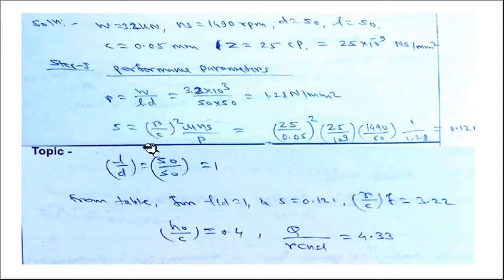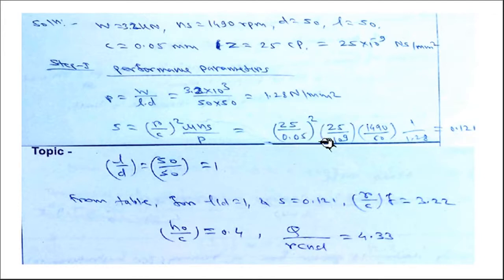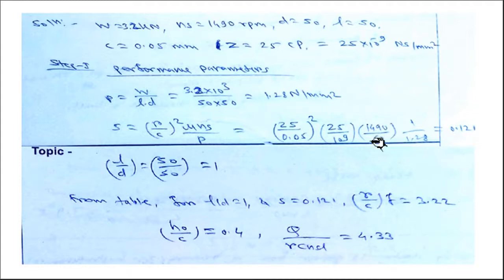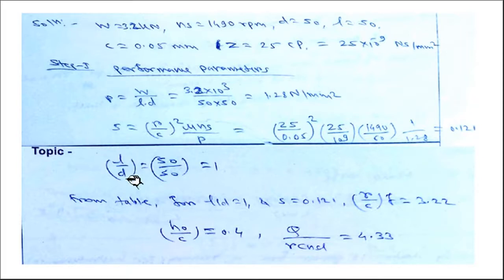Next, we calculate the Sommerfeld number S = (r/c)² × (μ × Ns / p). Here r = 25 mm, c = 0.05 mm, μ = 25 × 10⁻⁹ N·s/mm², Ns = 1490/60 rev/s, and p = 1.28 N/mm². This gives S = 0.121. The L/D ratio is 50/50 = 1, confirming a square bearing.